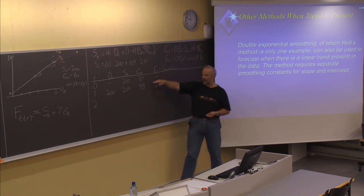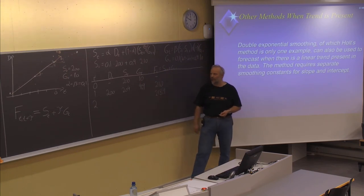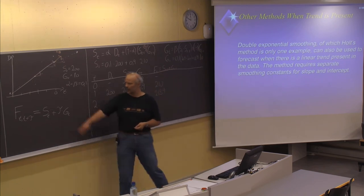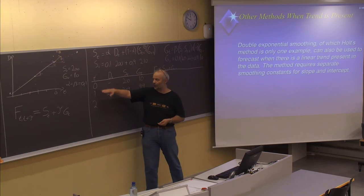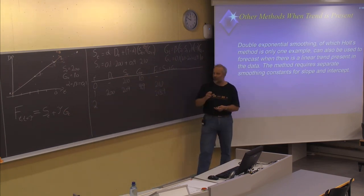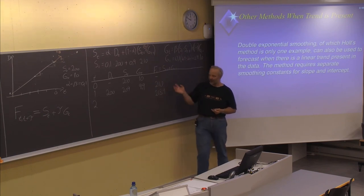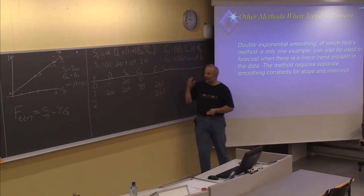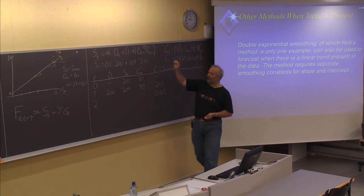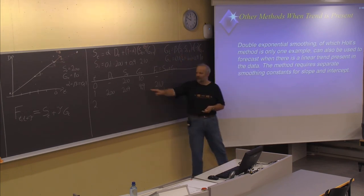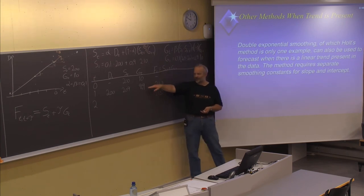If we had made a forecast in period 0 for period 2, it would have been S(0) + 2 × G(0) = 200 + 2 × 10 = 220. But after getting the period 1 data point, which was lower than expected, we adjusted the forecast for period 2 downward to 218.9. For each new data point, use these formulas to calculate updated values of s and g, then add them to get the next forecast.